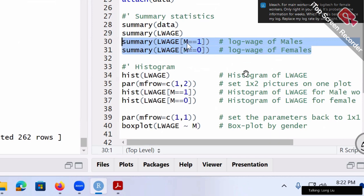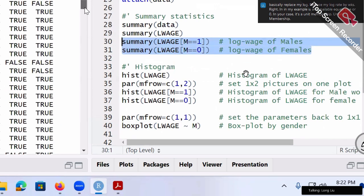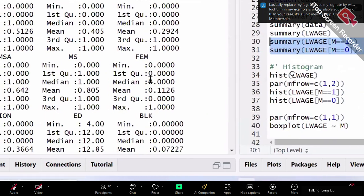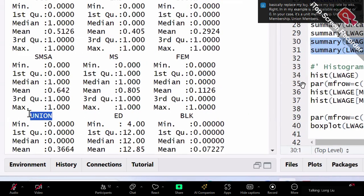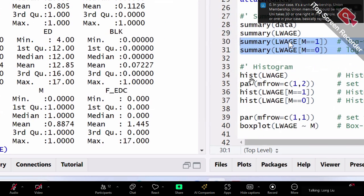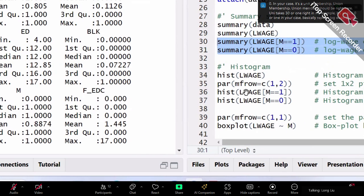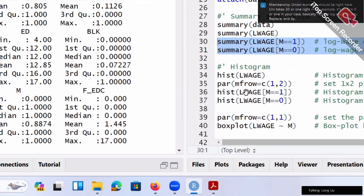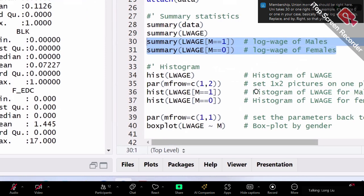In my example, it's a male variable equals one or zero. In your case, it's a union membership. Union membership should be right here. Union takes value of zero or one. In my example, it's M equals to zero or one. In your case, basically replace log wage by WKS. Replace M by union, so that you got the corresponding result.